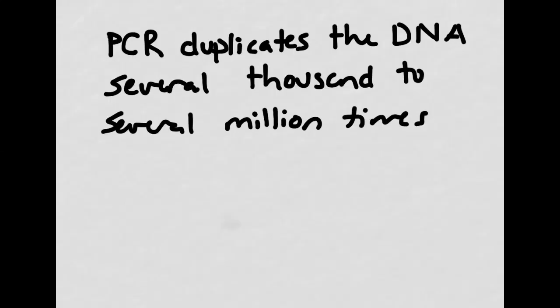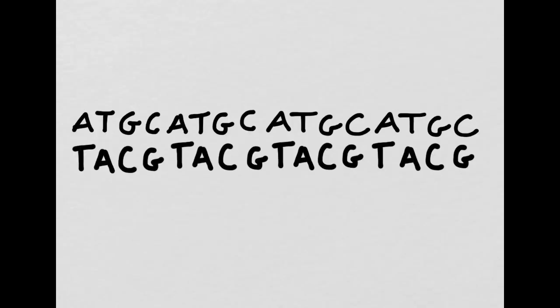PCR duplicates the DNA several thousand to several million times, even from a very small segment. Let's say that we hope to amplify this segment of DNA right here. It is only sixteen bases long, which isn't enough to run gel electrophoresis, and so we need to run PCR on it.